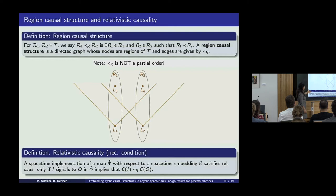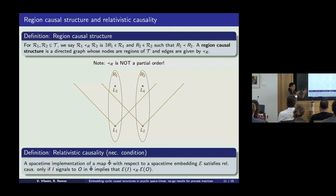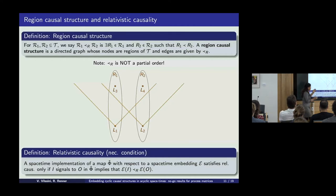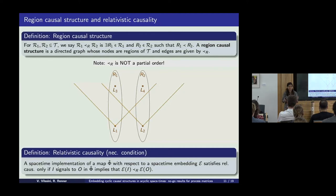We have a natural necessary condition for relativistic causality: if we embed a map in spacetime — meaning we associate spacetime regions to the quantum systems of the map — then if a system I signals to a system O, the region associated with I should be ordered before the region associated with O. This is the minimal necessary condition we need to ensure.